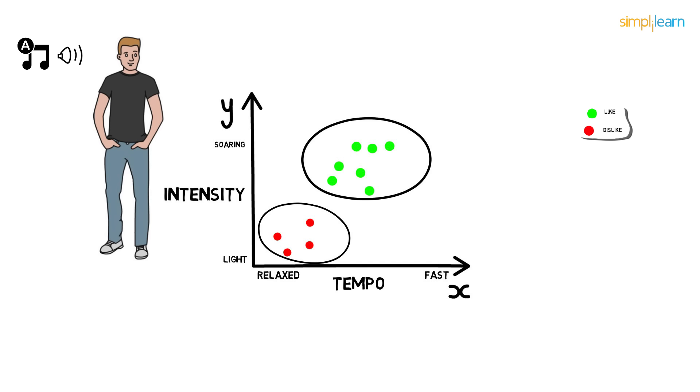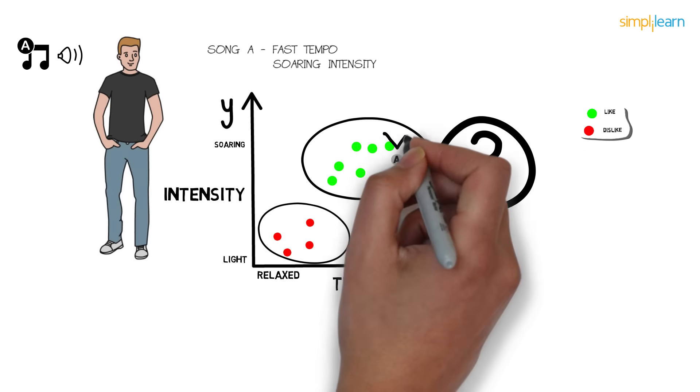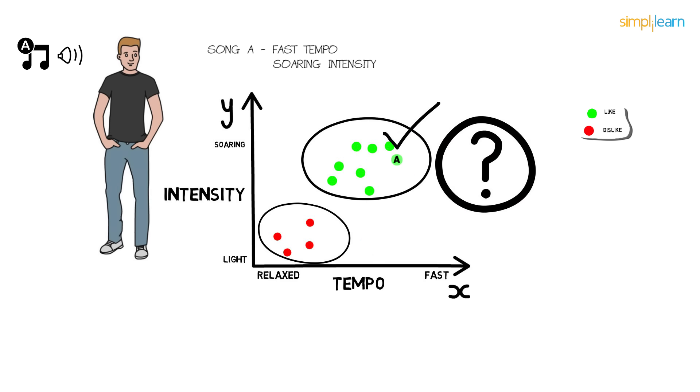Let's say Paul listens to a new song. Let's name it as song A. Song A has fast tempo and a soaring intensity, so it lies somewhere here. Looking at the data, can you guess whether Paul will like the song or not? Correct. So Paul likes this song. By looking at Paul's past choices, we were able to classify the unknown song very easily. Right?